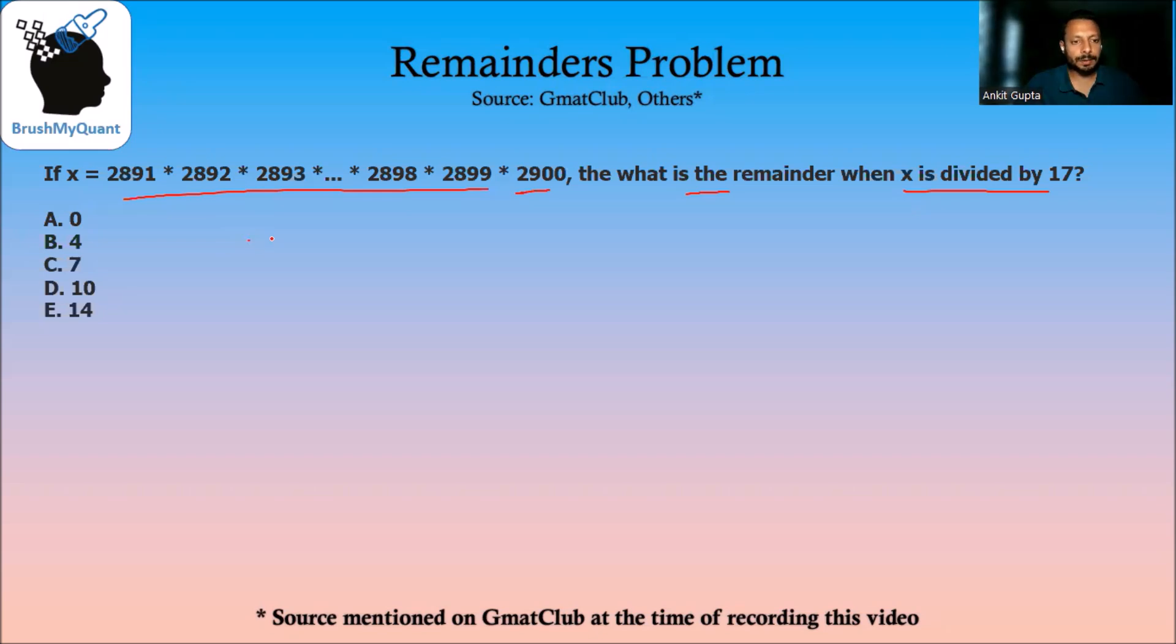Let's take an example to understand this. Let's say I need to find the remainder of 32 by 5. I know that 32 can be written as 8 into 4 and I can divide it by 5. The property says remainder of 32 by 5 is same as remainder of 8 by 5 multiplied by remainder of 4 by 5.